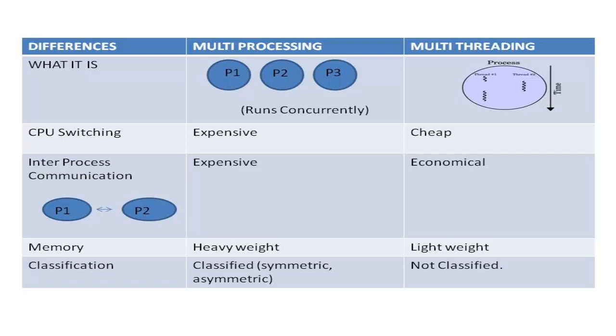Multi-processing is classified as symmetric and asymmetric. In symmetric multi-processing, each processor in the system runs tasks in the operating system. In asymmetric multi-processing, only the master processor runs tasks in the operating system. Multi-threading is not classified.